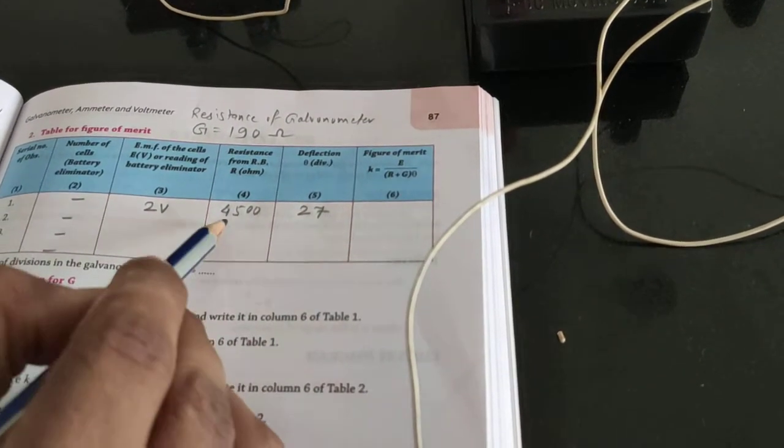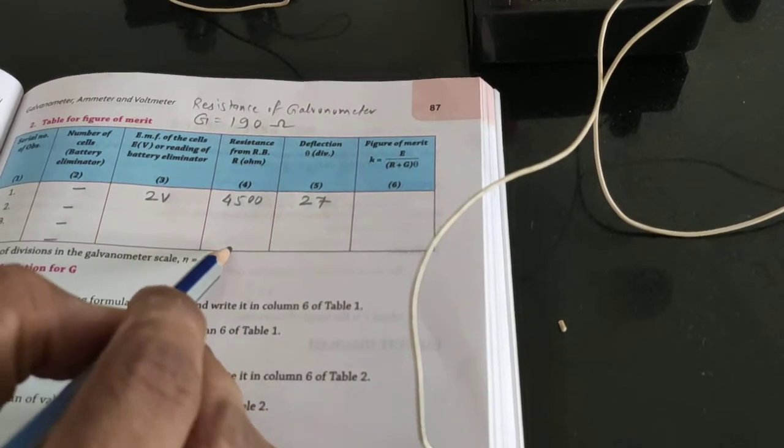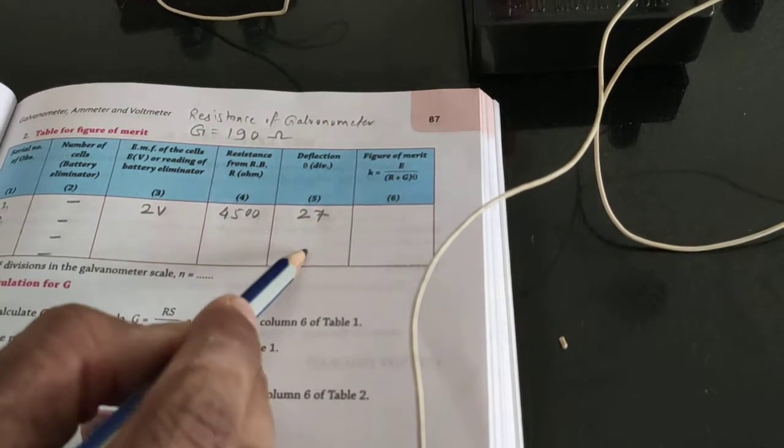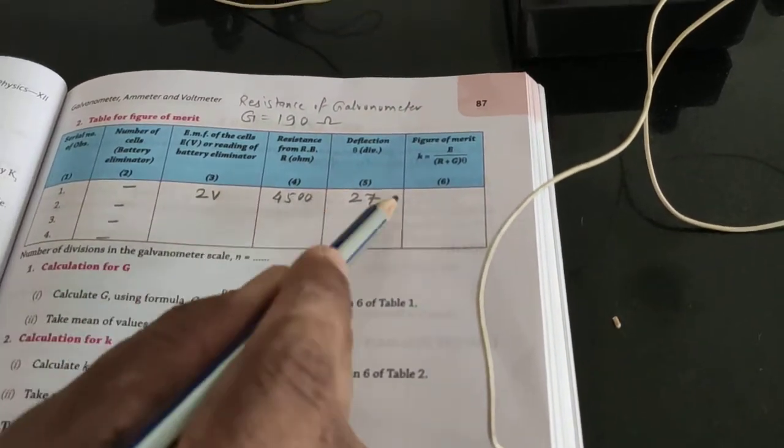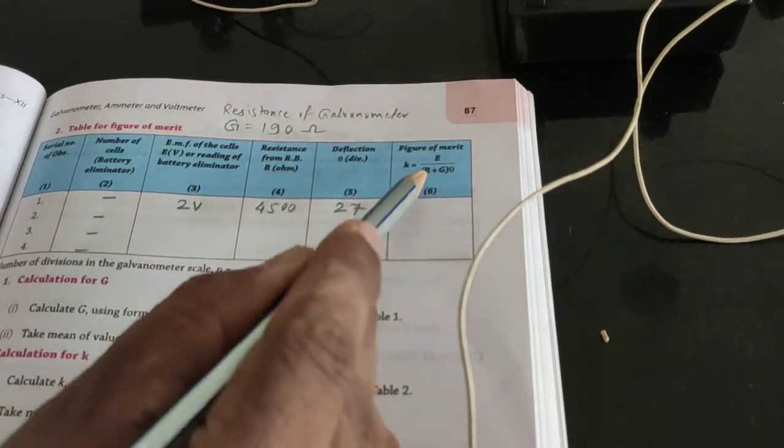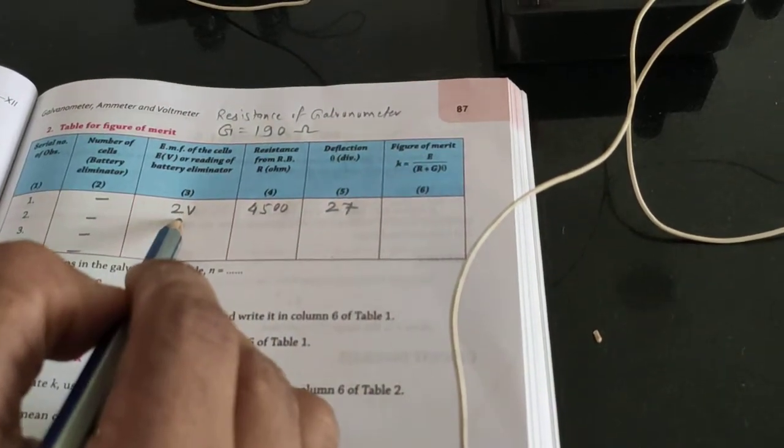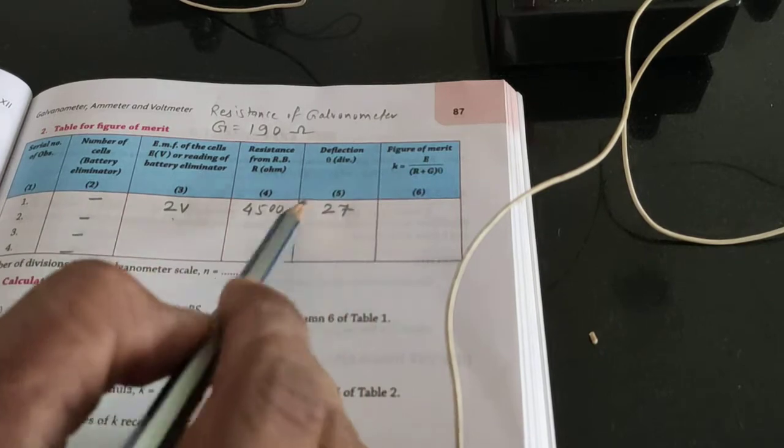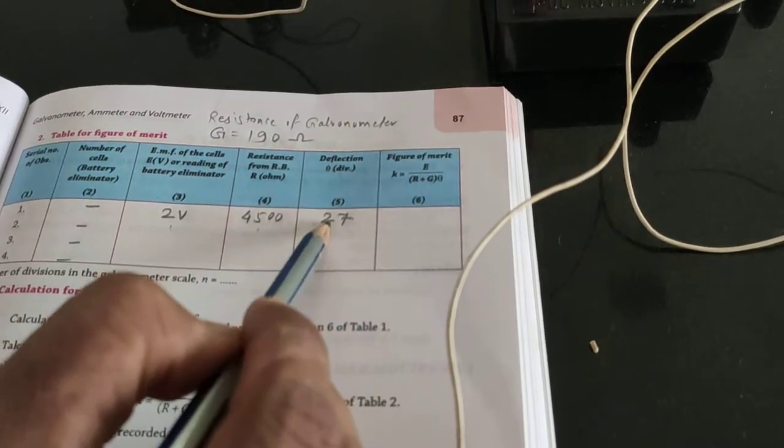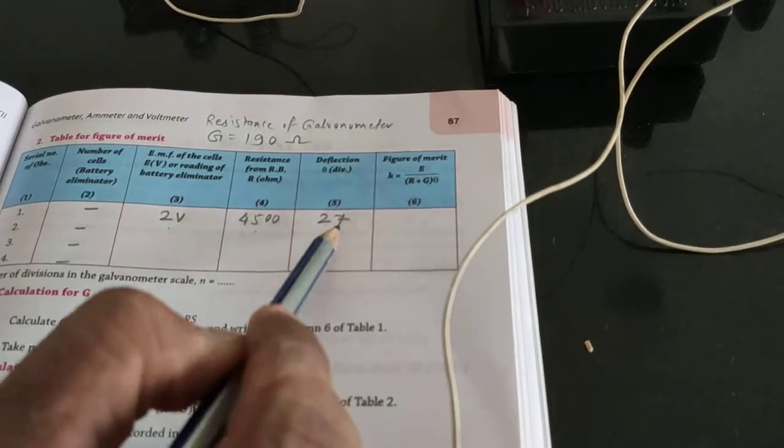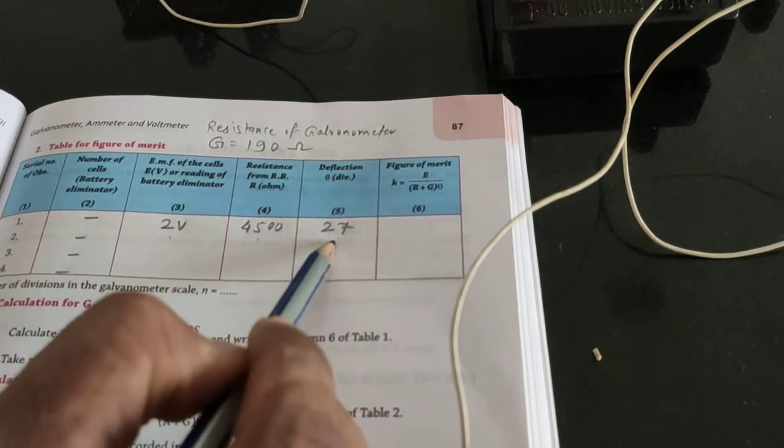Now what we will do - we will change the values of resistances accordingly, and we will get the different values of deflection. With these values, as you can check, E is 2 volt, it is constant for all the readings. This is G 190, and this theta is this deflection 27.